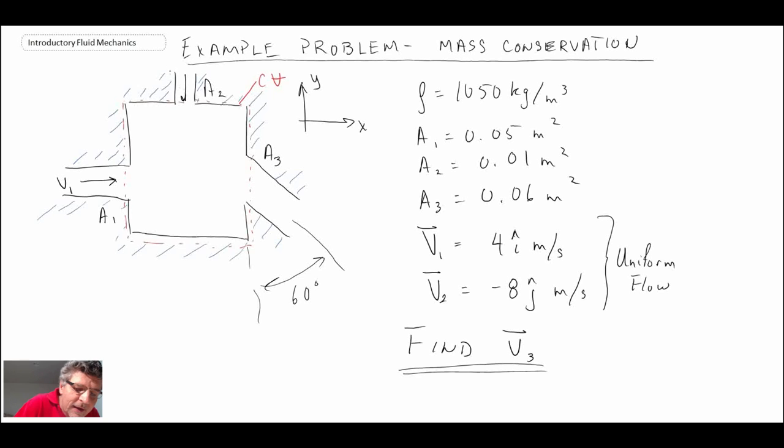And then v2 that's coming in across area two, it's negative so it's going down. So what we know is that that is v2. So we have two streams coming in and we then know that the third stream is going to be leaving. It's going to be leaving at an angle because they show us that at 60 degrees.